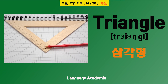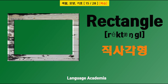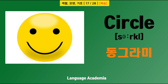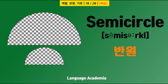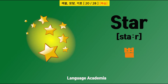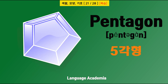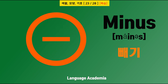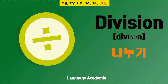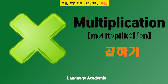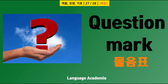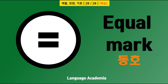Sky blue, 하늘색. Triangle, 삼각형. Rectangle, 직사각형. Square, 정사각형. Circle, 동그라미. Semicircle. Oval, 탕원형. Star, 별. Pentagon, 오각형. Plus, 더하기. Minus, 빼기. Division, 나누기. Multiplication, 곱하기. Arrow, 화살표. Question mark, 물음표. Equal mark, 등호.